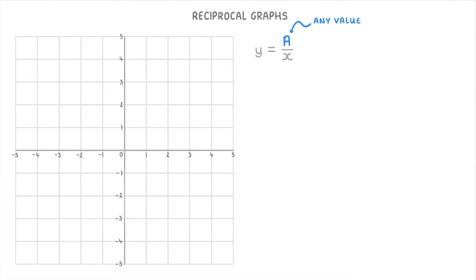So the a could be any value that you can think of. The most common one you'll see, though, is y equals 1 over x. So we're going to take a closer look at this one.